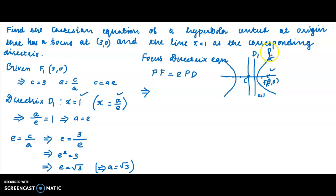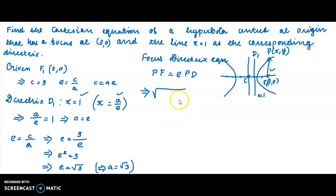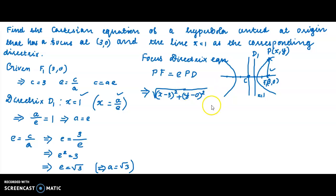Let P(x, y) be any point on the conic, and F = (3, 0). Then the distance PF = √[(x − 3)² + (y − 0)²]. This equals e × PD = √3 × PD, where PD is the perpendicular distance from the point to the directrix.